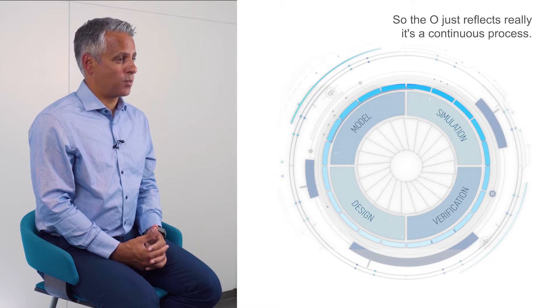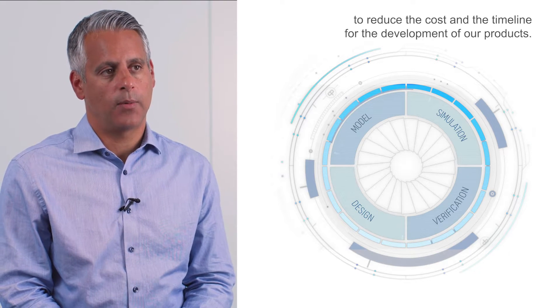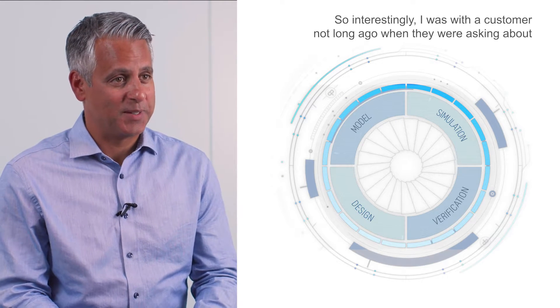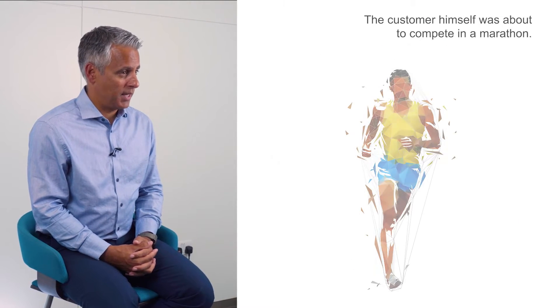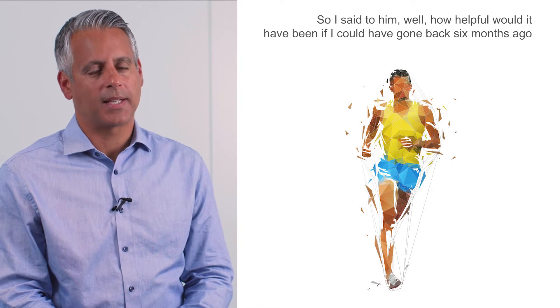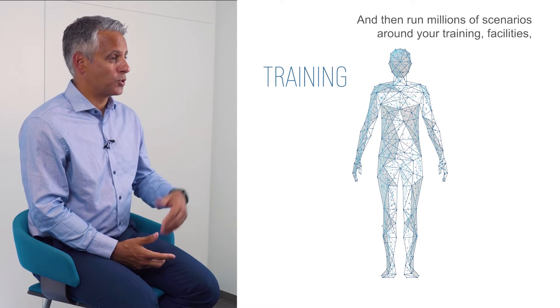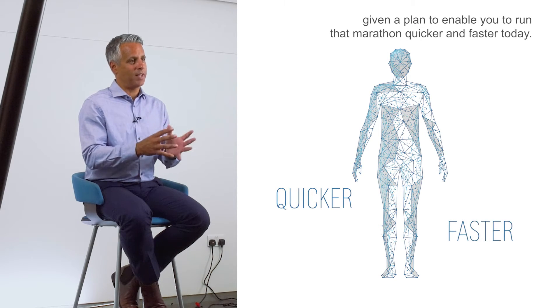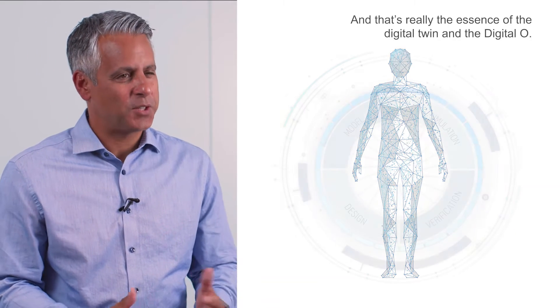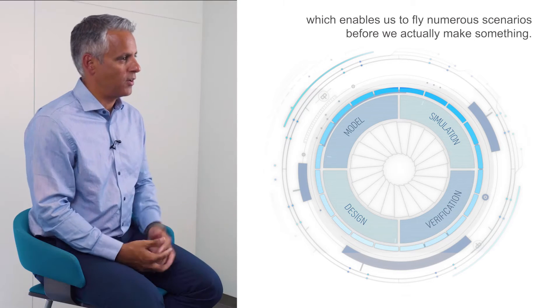The digital O reflects a continuous process and is really a means to an end — to allow us to reduce the cost and the timeline for the development of our products. I was with a customer recently and they asked about digital twinning. The customer was about to compete in a marathon, so I said: how helpful would it have been if six months ago I could have created a digital twin of you — your digestive system, nervous system, skeletal system — and run millions of scenarios around your training, facilities, and dietary requirements, so that you could have been given a plan to run that marathon quicker? The customer said yes, and that's really the essence of the digital twin — to provide a model in simulation that enables us to run numerous scenarios before we actually make something.